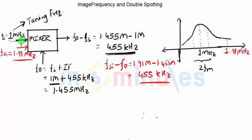We conclude that I can listen to 1.91 megahertz even when my receiver was tuned to 1 megahertz. This is something very important — even when my receiver is tuned to 1 megahertz, I can listen to 1.91 megahertz at the output side. Let us now define what is double spotting. If I want to listen to the 1.91 megahertz radio station, I will obviously tune my receiver to 1.91 megahertz.